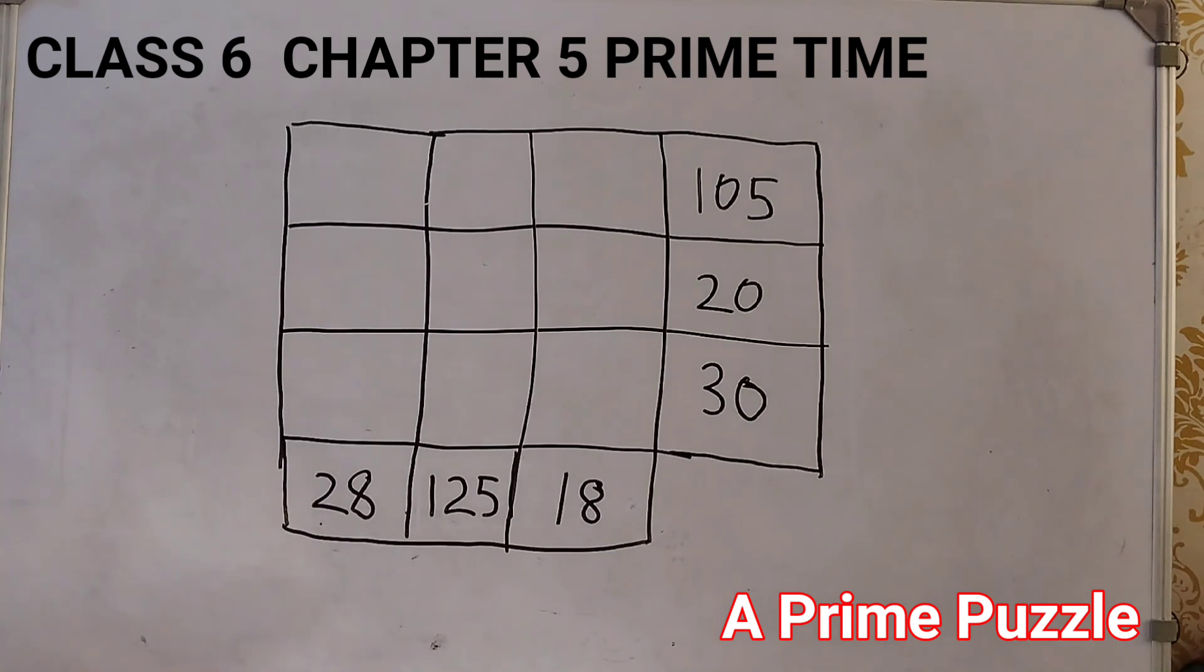Let us get started. First, look for a cube number. Cube number means, like if I say 1 into 1 into 1, that is 1 cubed or 1. Similarly, 2 into 2 into 2, that is equal to 2 cubed or 8. So, these are called cube numbers.